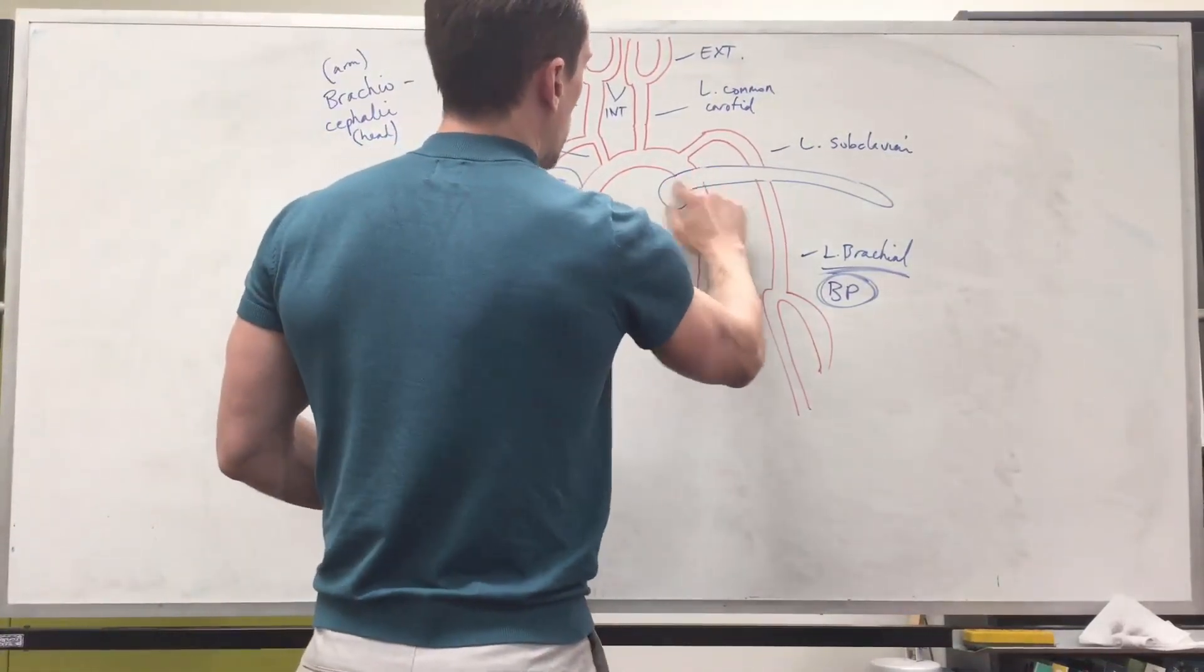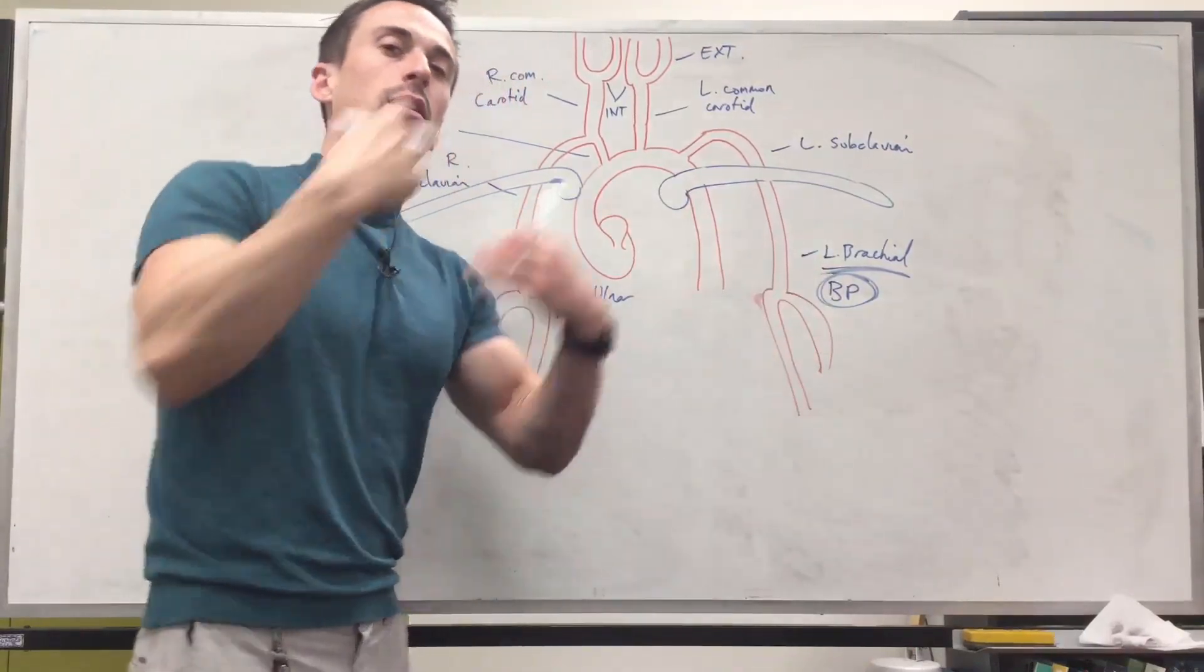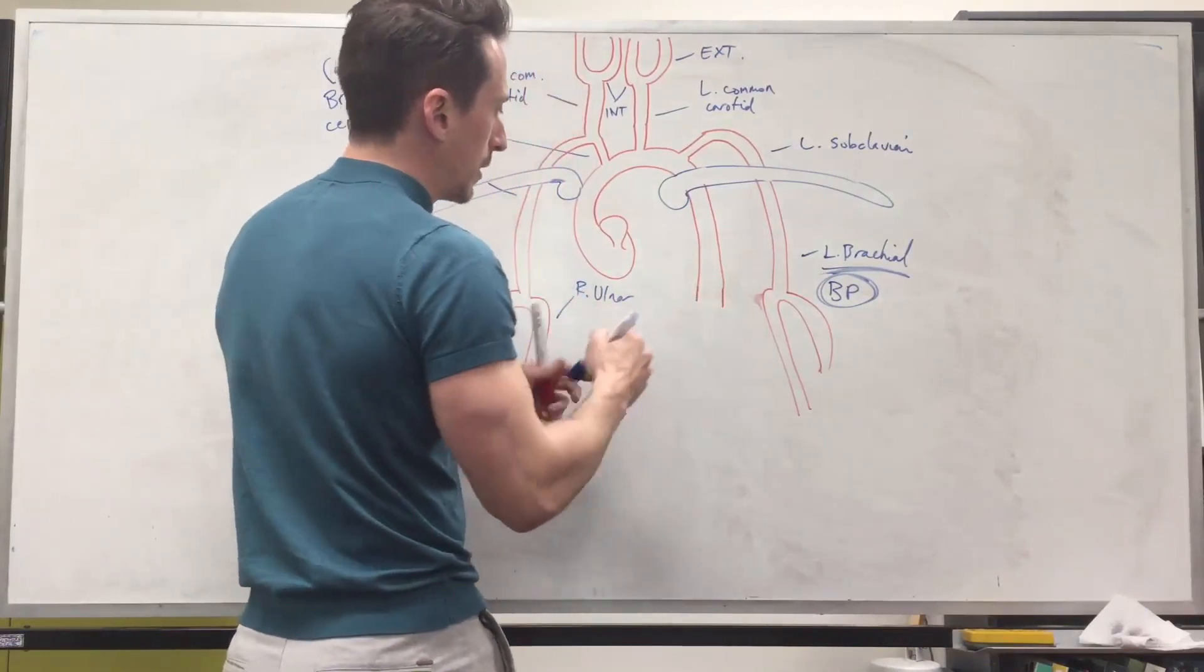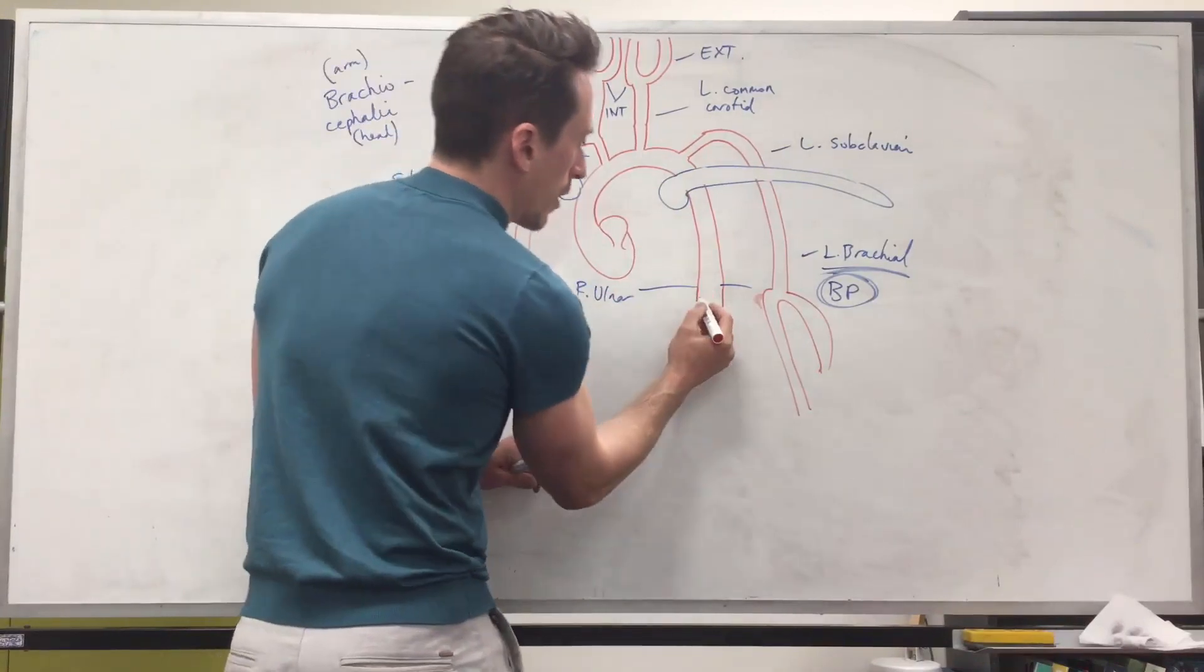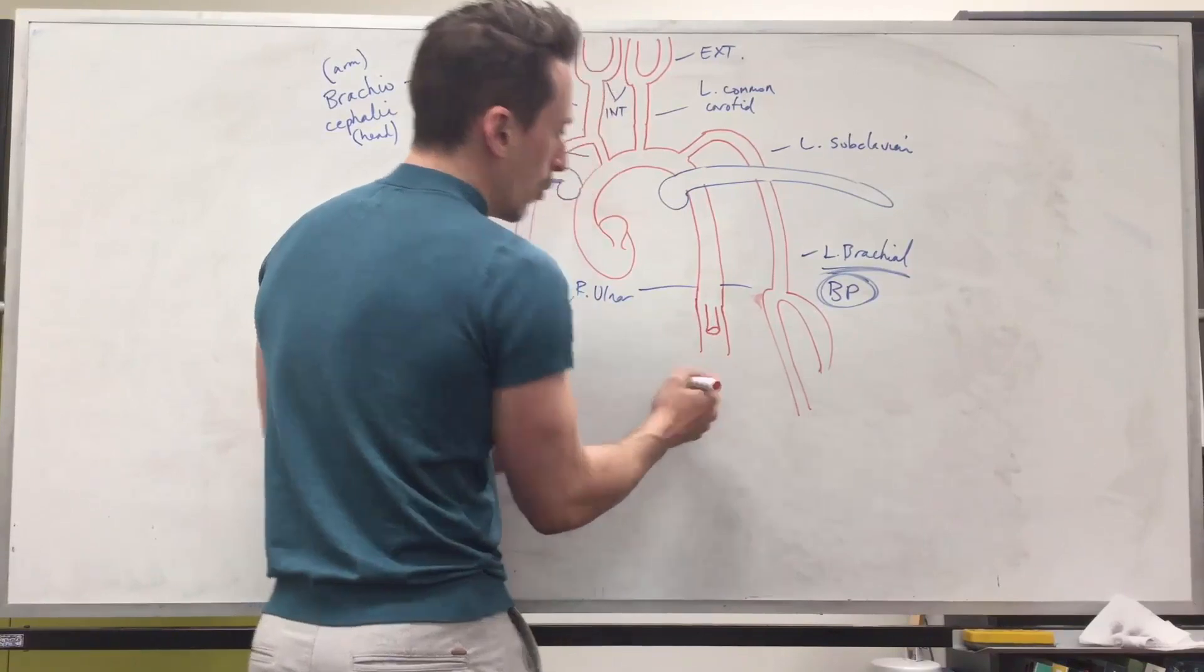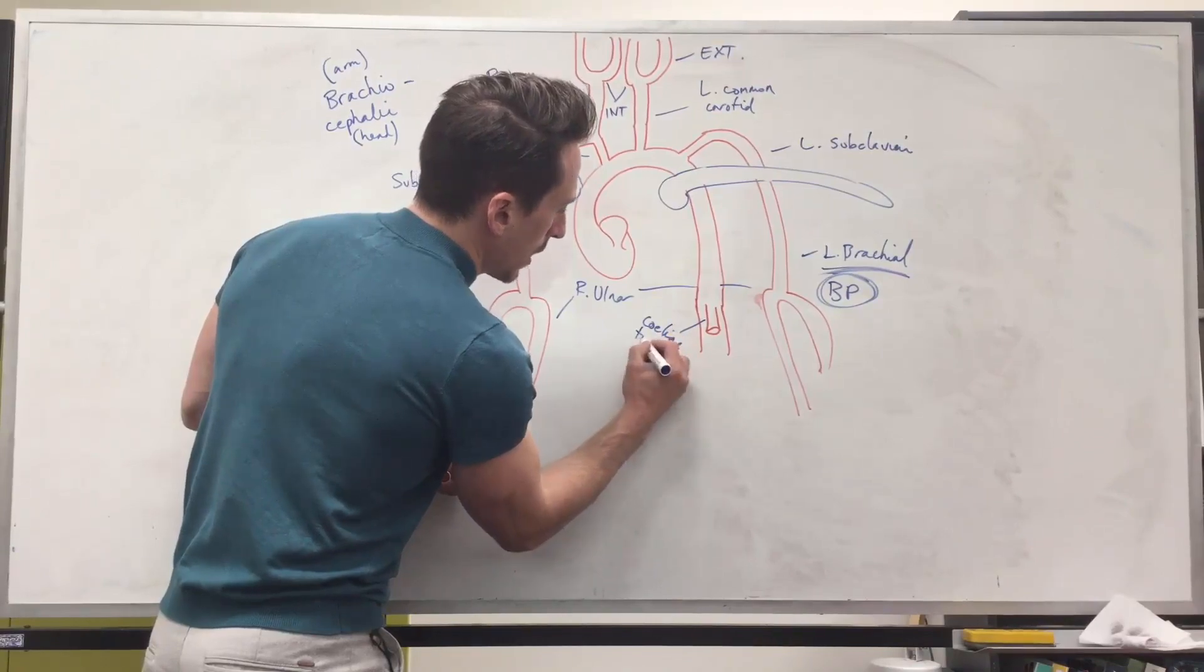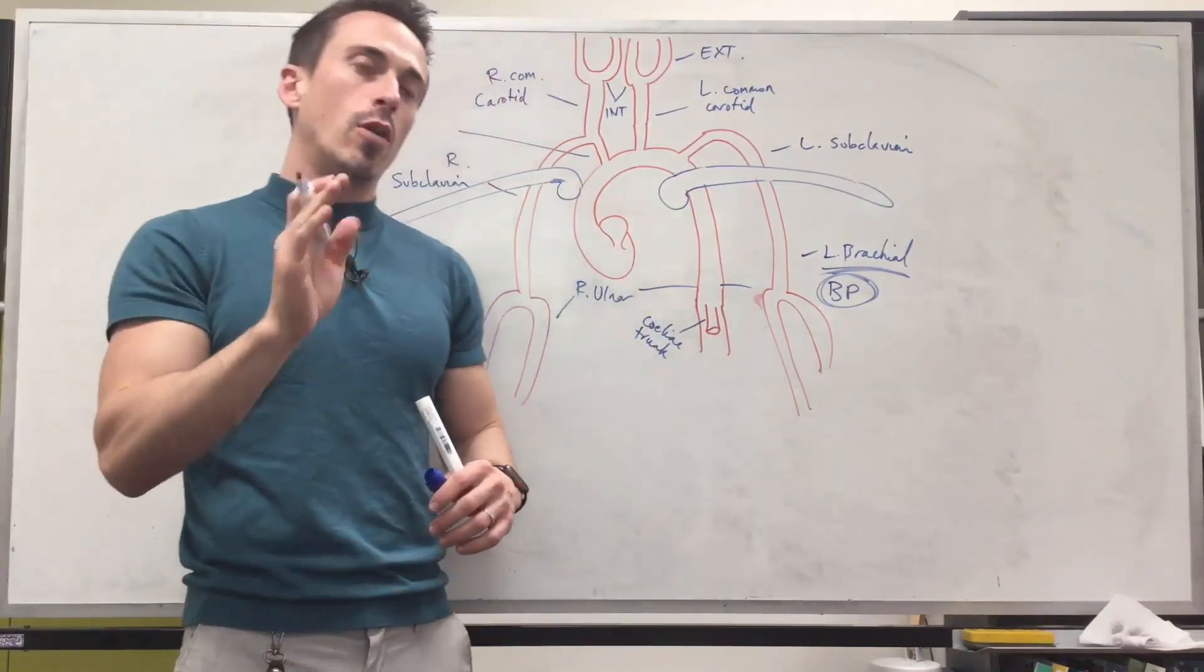Now let's continue with the aorta. Now the aorta is going down. There's going to be a couple of branches that are going to feed the esophagus, feed various particular areas but it doesn't matter. We're going down, we go through the diaphragm. So we're going through the diaphragm and as we go down through the diaphragm, there is an immediate branch that comes off which is called the celiac trunk. Now this is the celiac trunk and the celiac trunk has three branches that come off which I've done a video on.